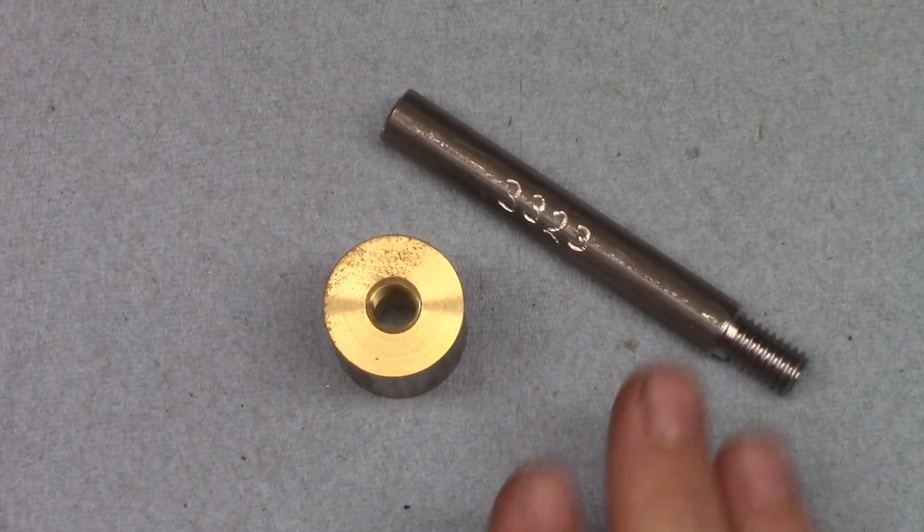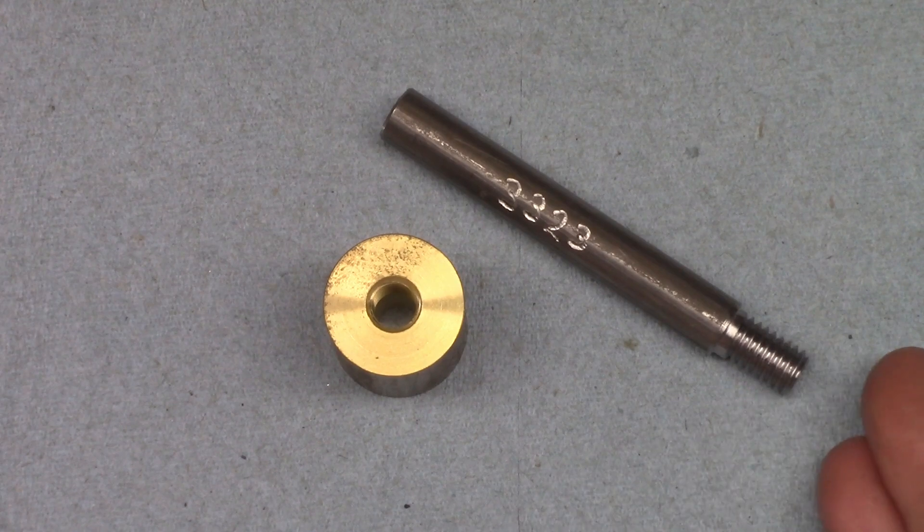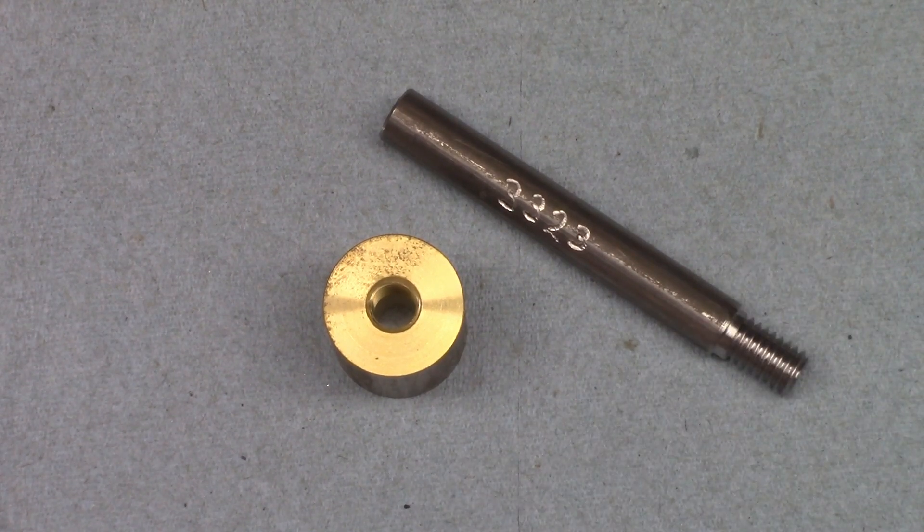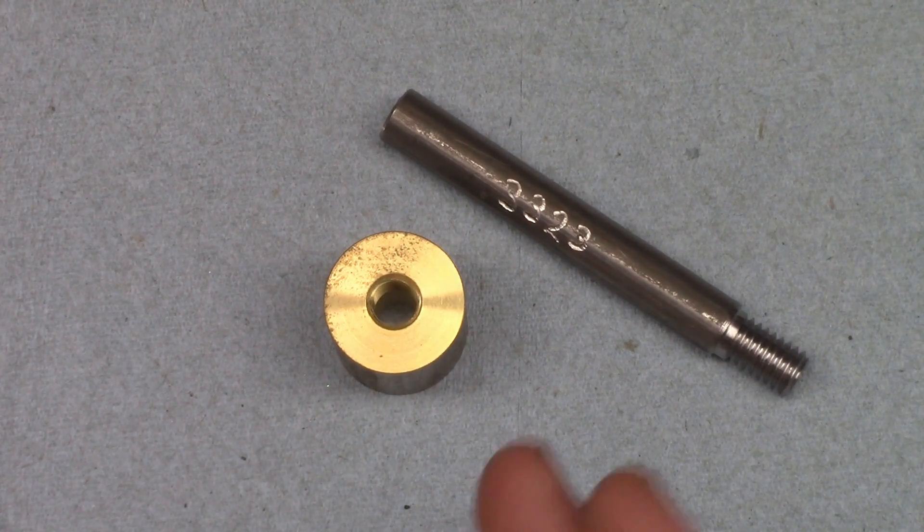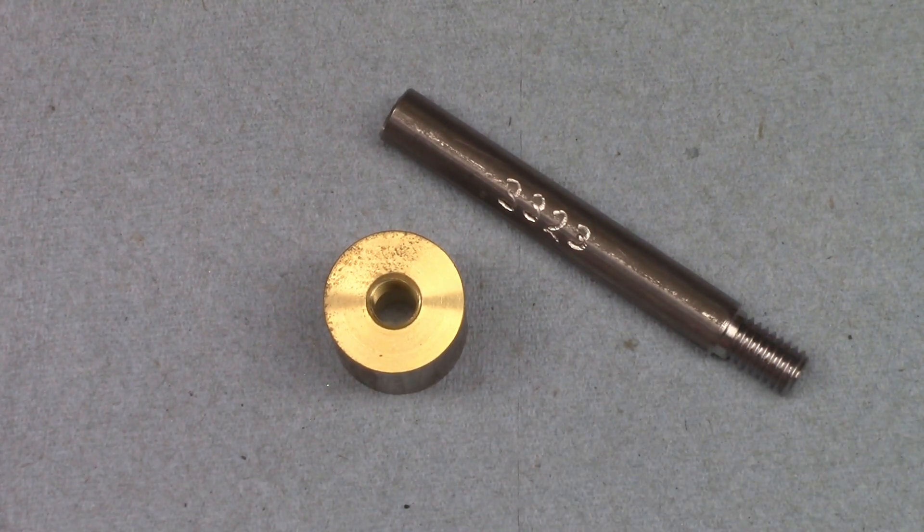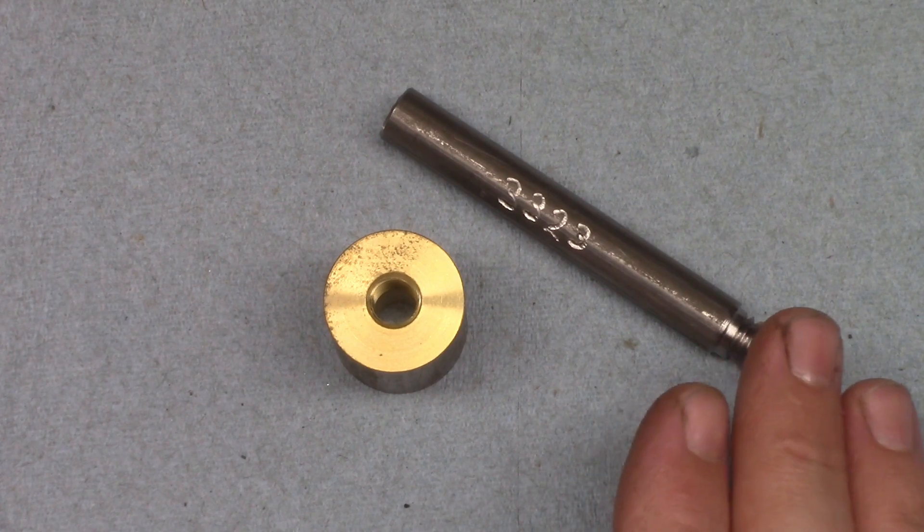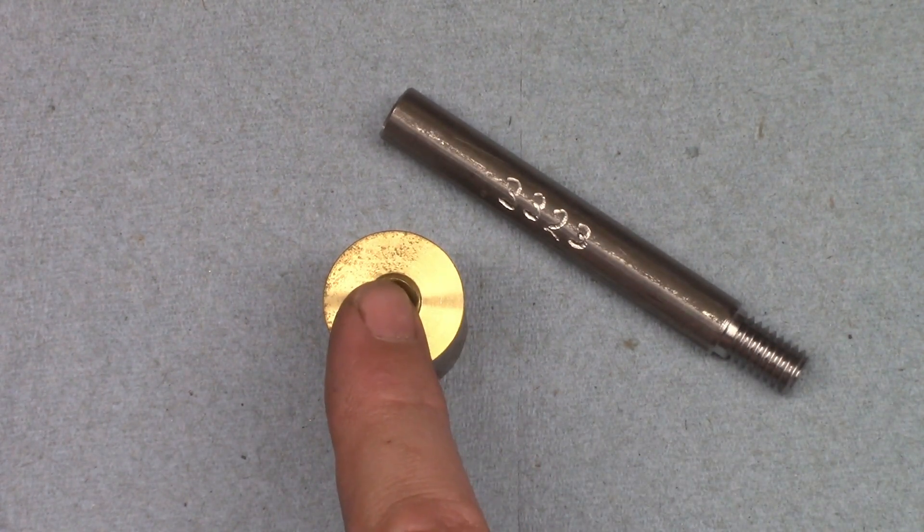Speaking of wear, your cutting tool will wear over time, so external threads will get larger as the job goes on, and internal threads will get smaller. To account for this, I generally aim for the low end of the pitch diameter range on external threads and the high end on internal ones.